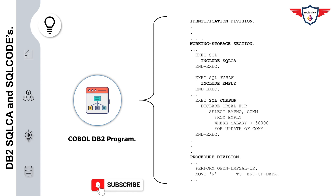The second way of including SQLCA in your COBOL DB2 program is by using an INCLUDE statement specified within the EXEC SQL statements. This is the standard way of including the SQL Communication Area. Remember, if your COBOL DB2 program is a sub-program, you have to include the SQL Communication Area in the Linkage Section of the sub-program.